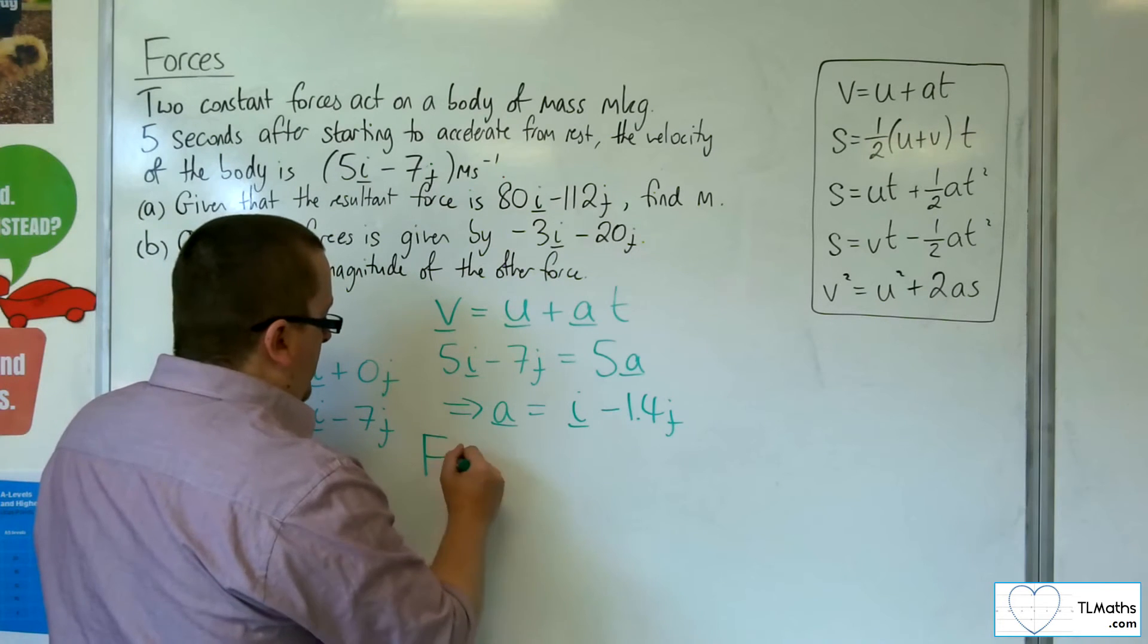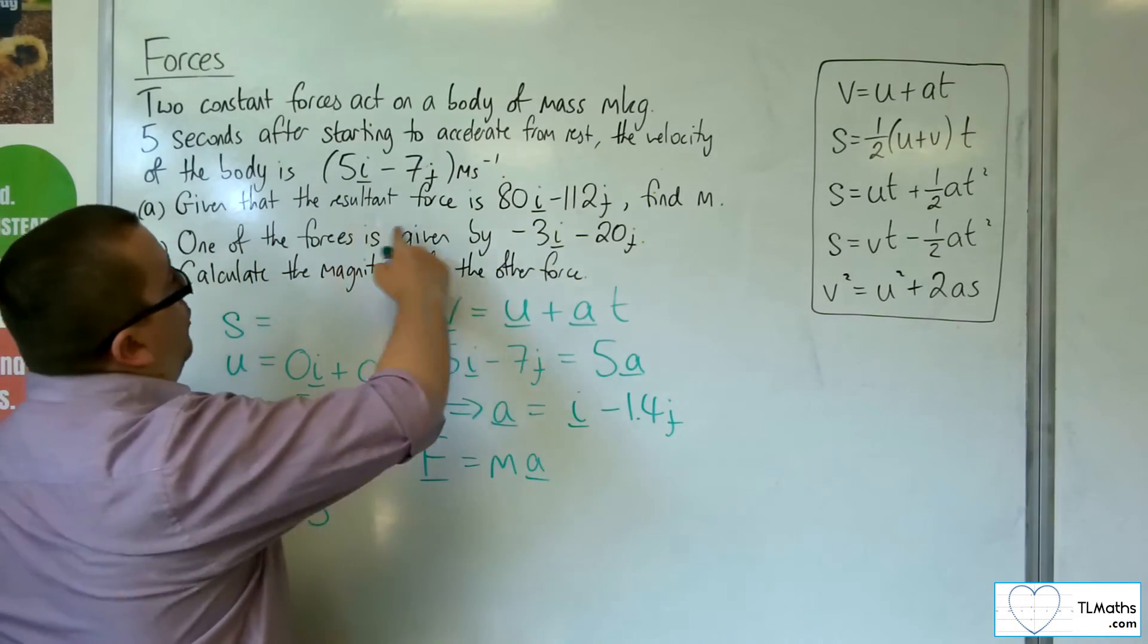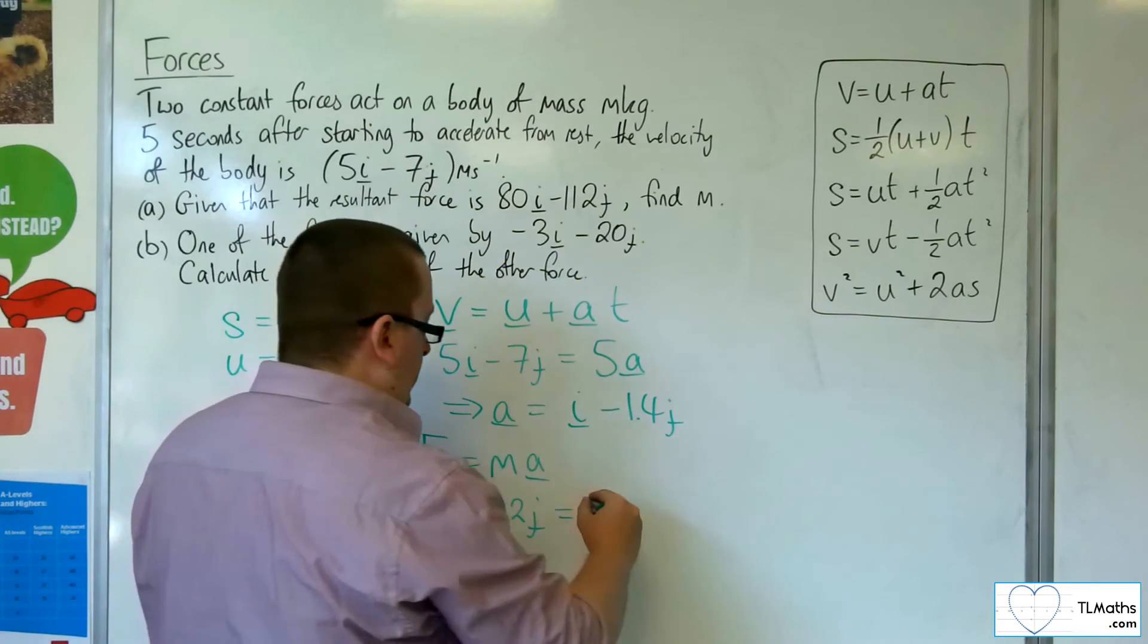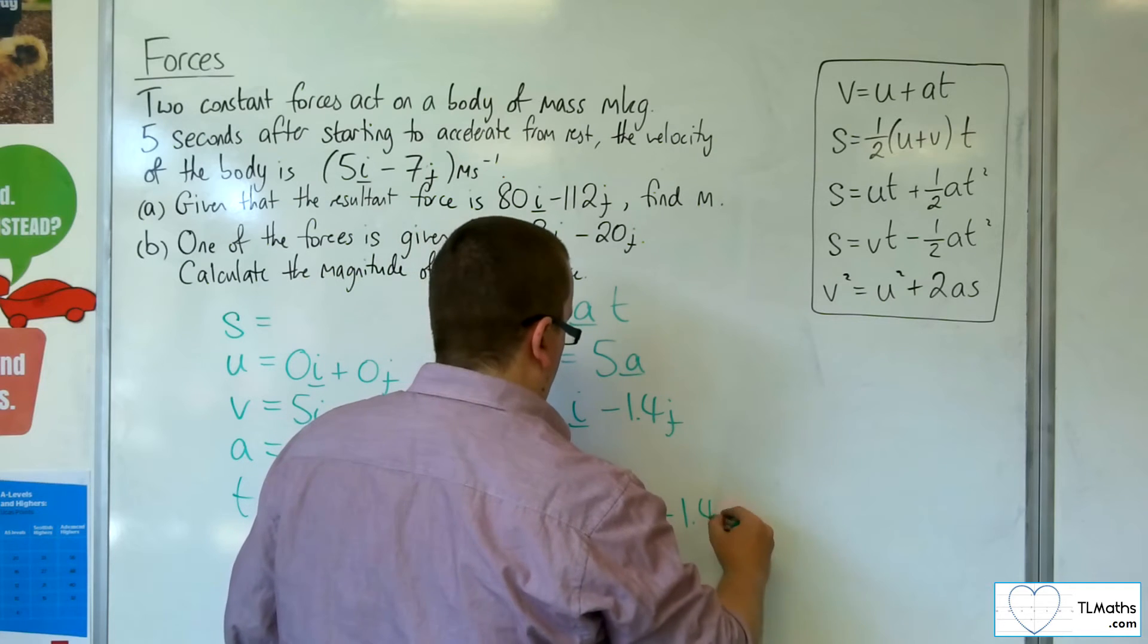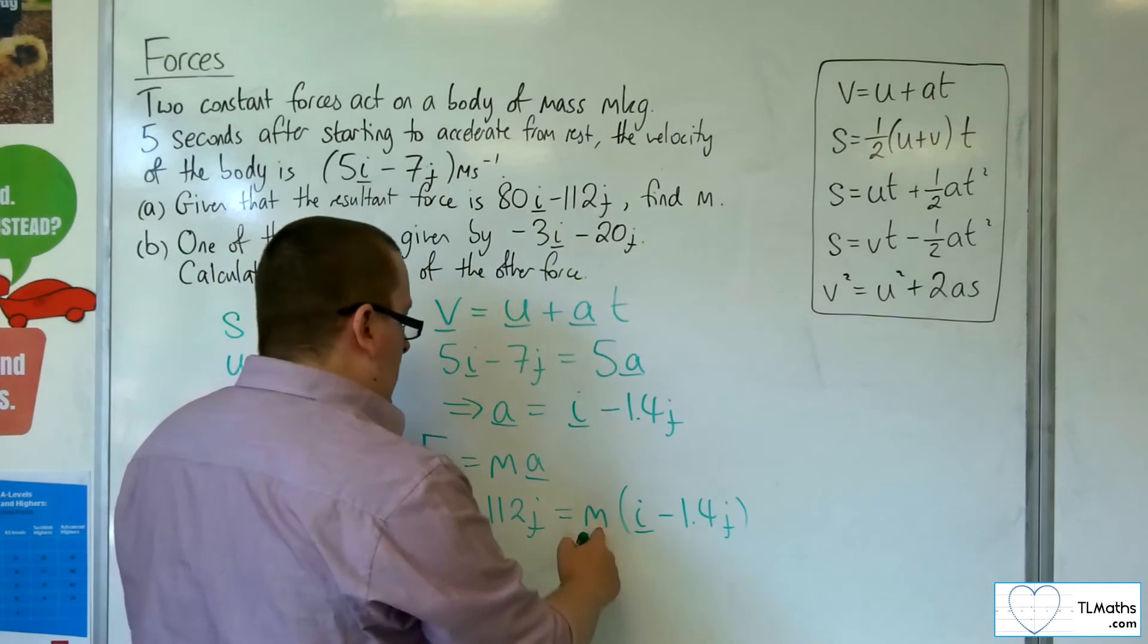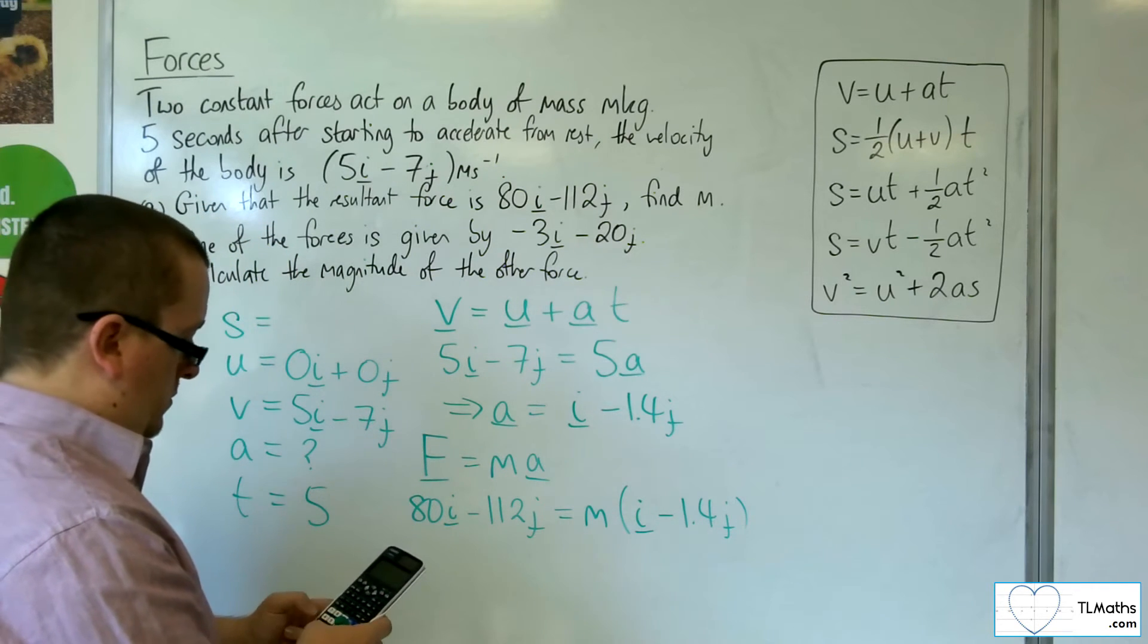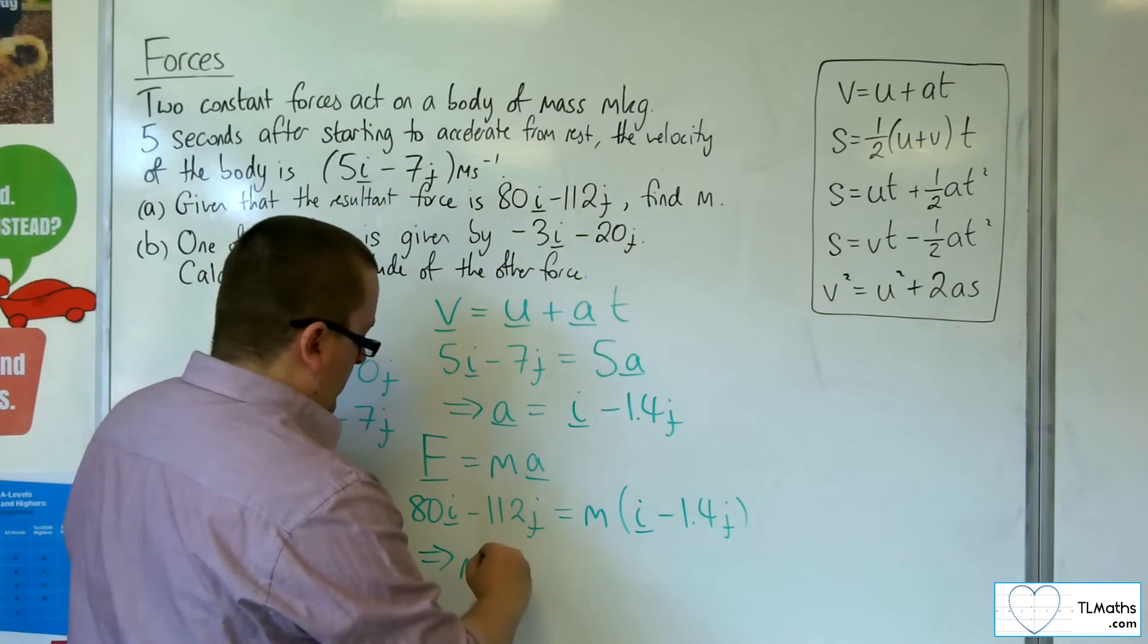Now I can utilize f equals ma, Newton's second law. So the net force, the resultant force, is 80i minus 112j. And that's going to be equal to the mass times the acceleration. So I need to find what m would be. Well, m would have to be 80 in order to multiply by the i to get the 80i. We just need to check that 80 lots of 1.4 is the 112. So that means m is 80.